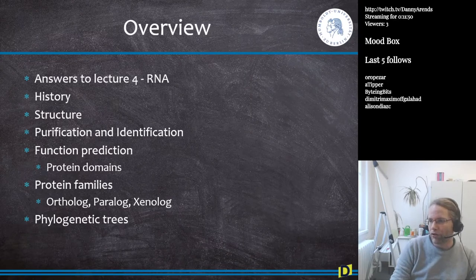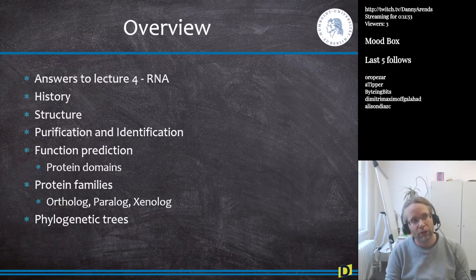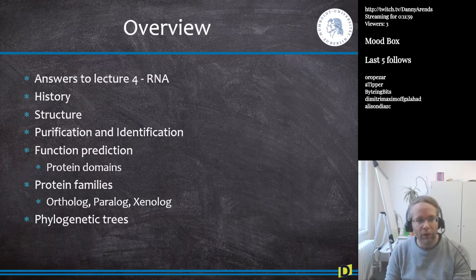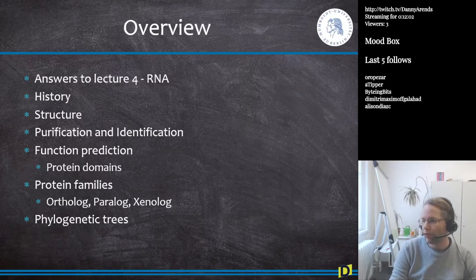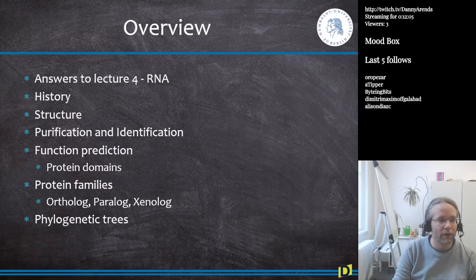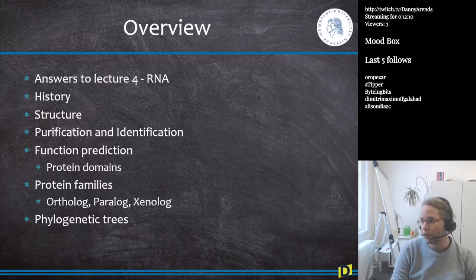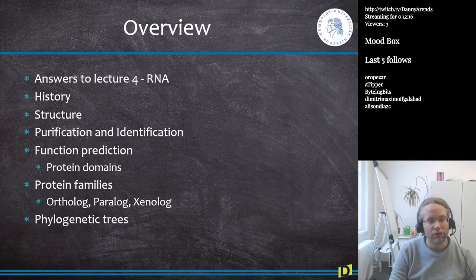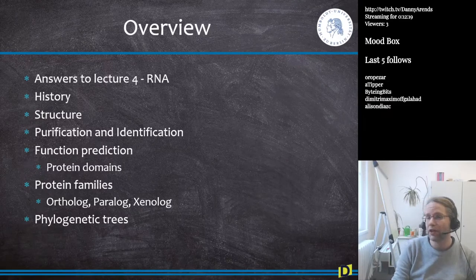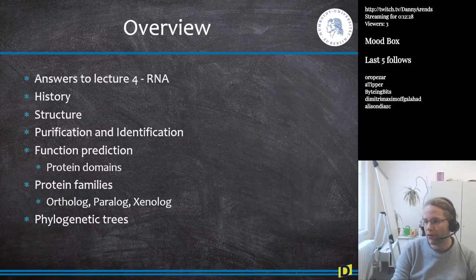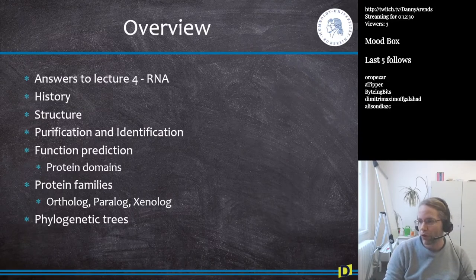We will be talking about structure a lot — the differences between primary structure, secondary structure, and tertiary structure of proteins. There will be a part about how to purify proteins and identify the different proteins you are working with. We will do function prediction and protein domains — how do I determine which part of the protein does what? We will also talk about protein families, and I'll explain the difference between an ortholog, a paralog, and a xenolog. There will also be a bit about phylogenetic trees, which will come back in a later lecture.